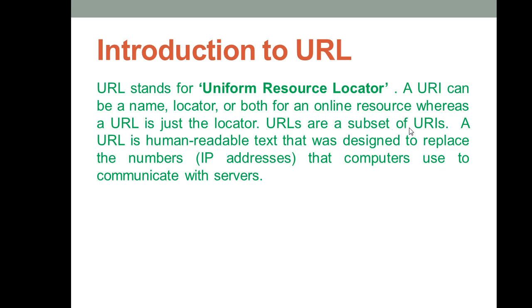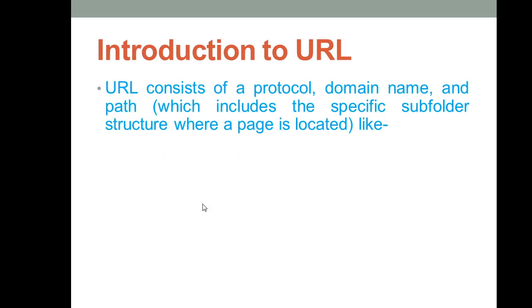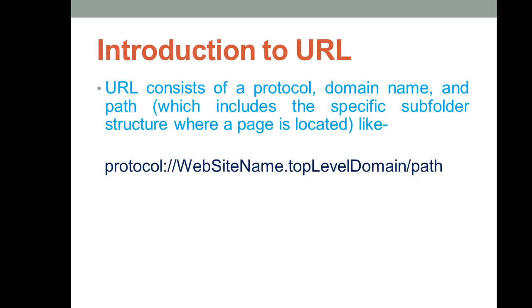A URL is the human-readable text that is designed to replace the numbers — that is, the IP addresses — that computers use to communicate with servers. A URL consists of a protocol, a domain name, and a path, which includes the specific subfolder structure indicating where the page is located.